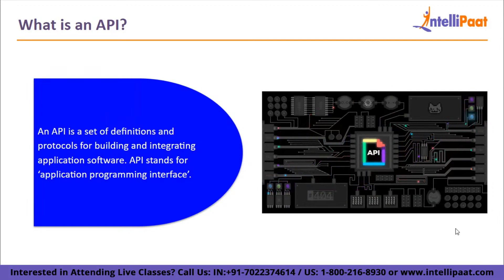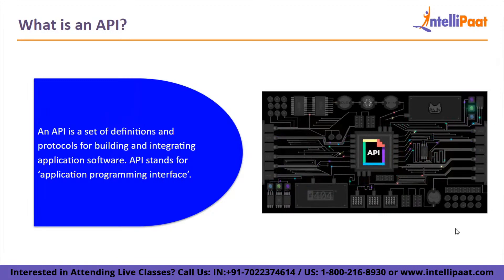Another real-time example is delivery services that have their own app. Inside that app, they use Google Maps API to pull out a current delivery status for a delivery. Any website where you make payments includes several payment options like Pay through PayPal or Google Pay. The website uses PayPal's API and allows its users to pay through that application.